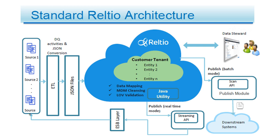Now we talk about the standard Reltio architecture, divided into a few sections: source, then ETL, then JSON file. The blue color cloud is the Reltio cloud, divided into two parts — customer tenant and data tenant. Some Java utility is also there. On the right side, data can be published so downstream systems can use it, with an ESP layer for getting data via streaming API.